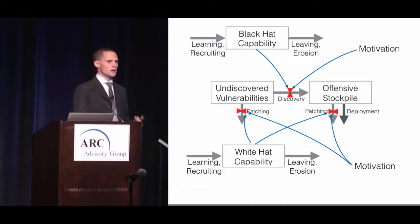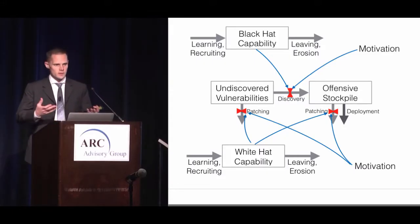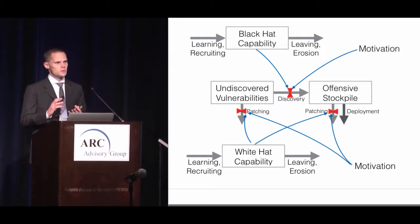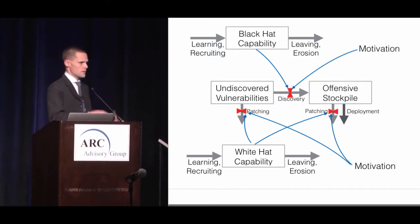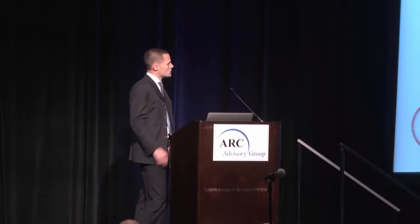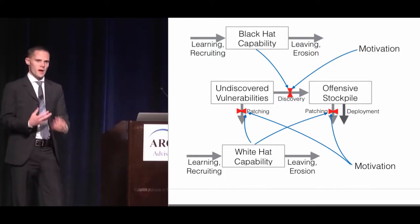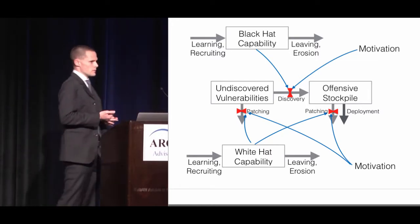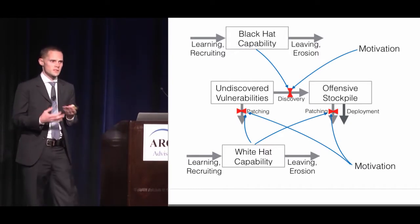We could also influence the rate of learning of white hat actors by offering training in how to discover and report vulnerabilities, or how to generally use computers to build up the initial stock of people who have the capability to get involved. Another thing we could do is encourage people acting in a black hat way to leave the profession — either by arresting them or giving them jobs. Both of those would serve the task of getting people acting in a black hat capacity to leave that occupation.